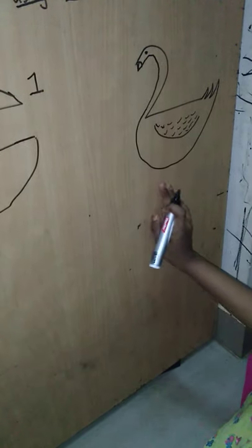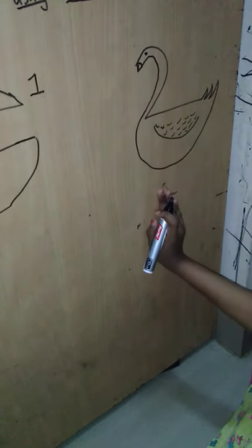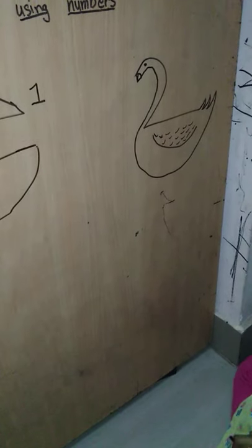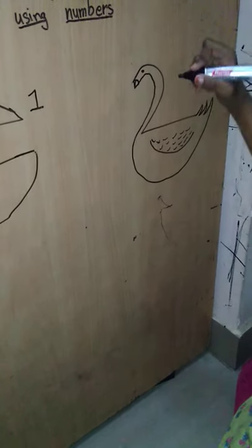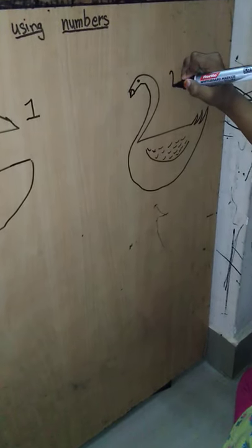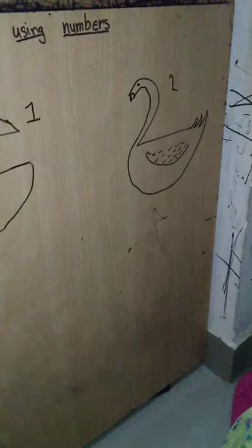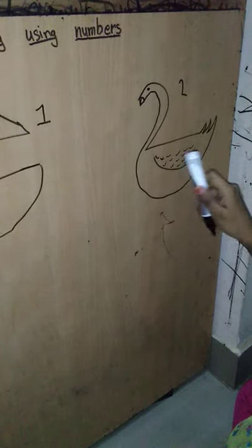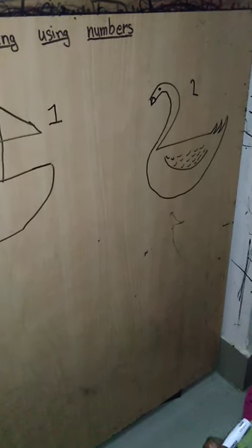So it looks like this — we drew a swan using the number two! You can even color it like a duck.